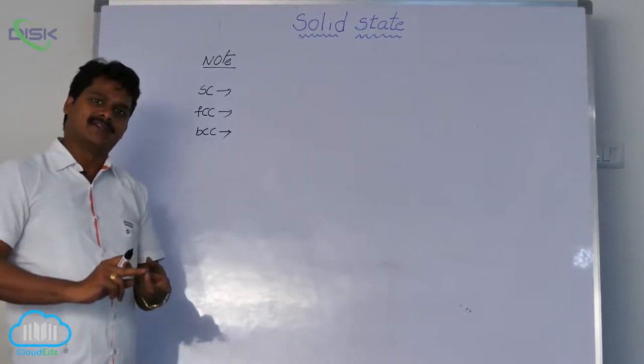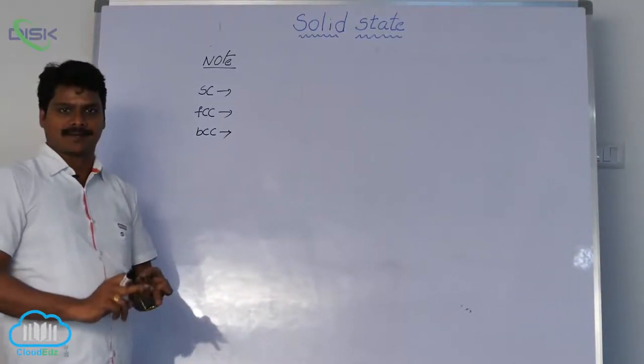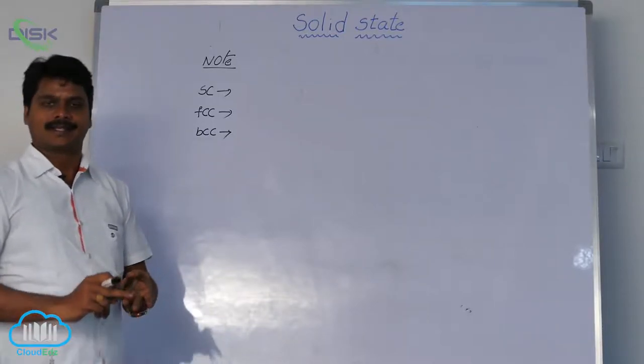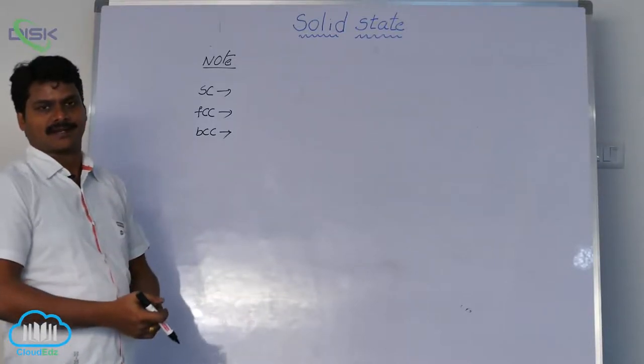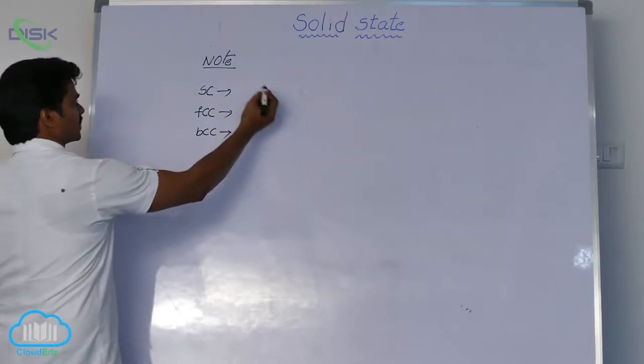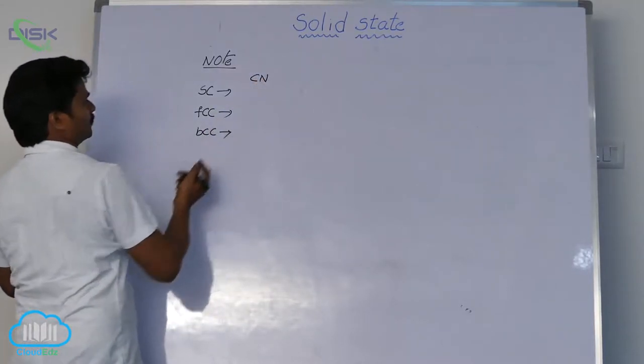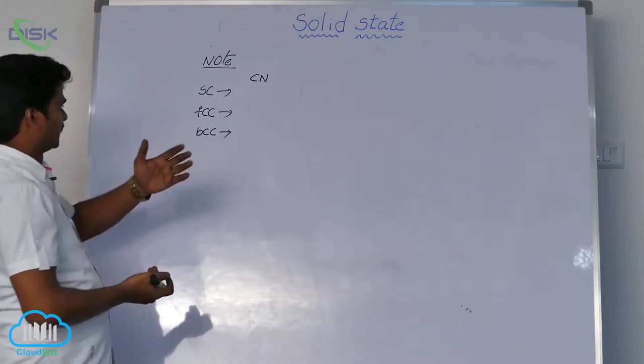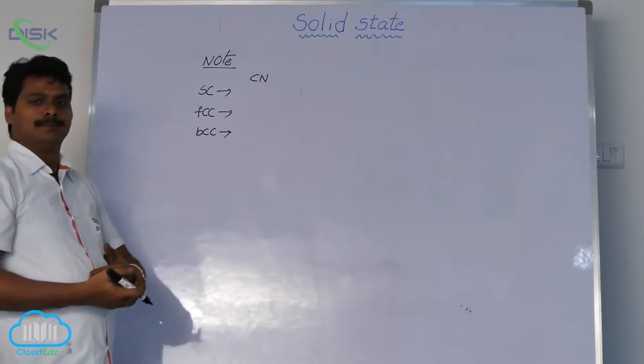So about packing efficiency, nearest and average distance, radius to edge length relation - these all we have derived earlier. Now in short, let's see the formulas related to simple cubic system, FCC system, and BCC system.